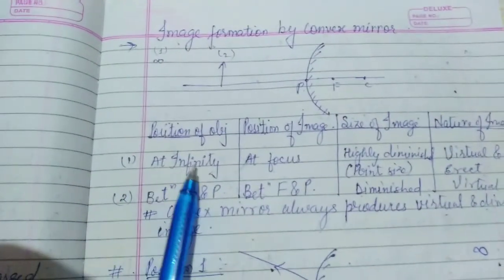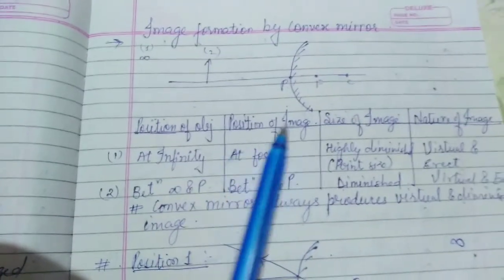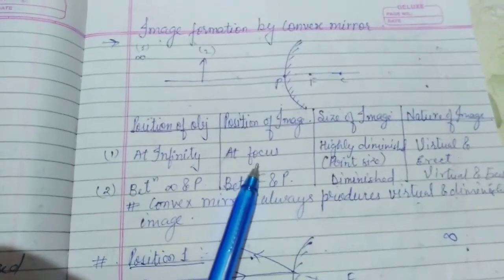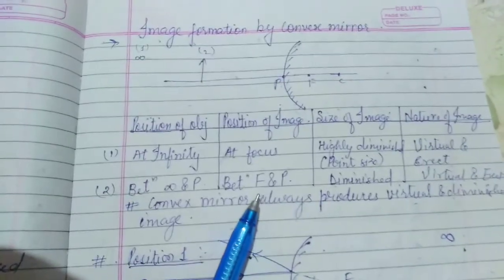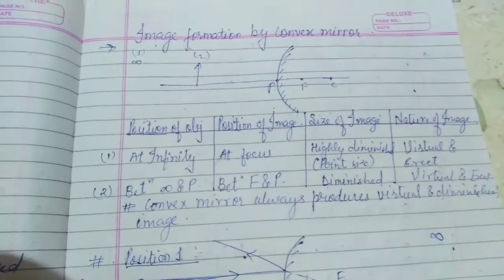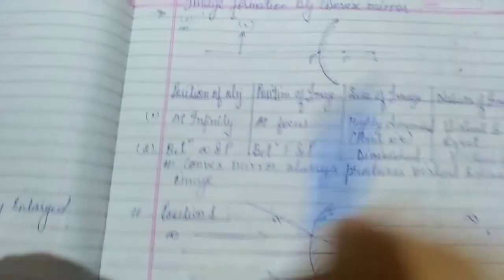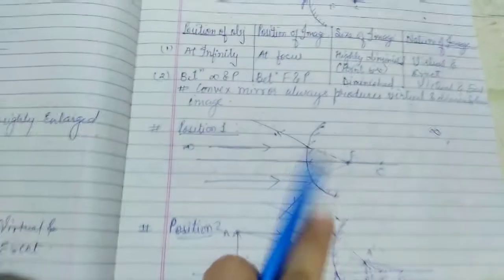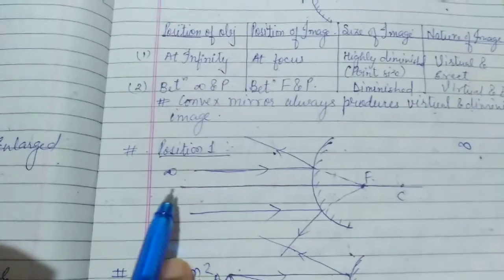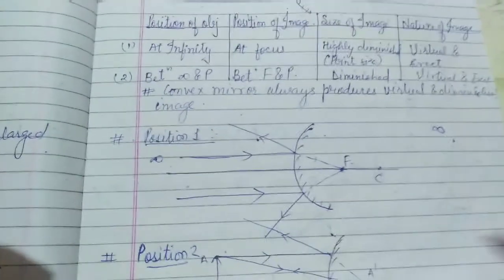Let's start with the first case: when the object is placed at infinity. When the object is placed at infinity, the image will form at focus. This is the same as the first case of the concave mirror where the object was placed at infinity and the image was formed at focus. Now, since the object is at infinity, the rays coming from the object will be parallel to the principal axis.